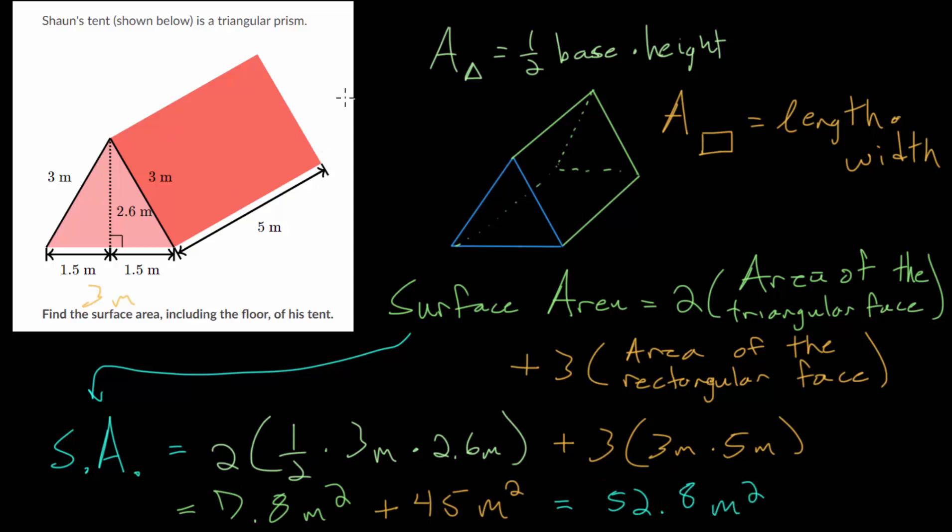So the total surface area of this triangular prism is 52.8 square meters. So a question we could ask is, how much material do we need to actually make this tent? And you would need 52.8 square meters of material.